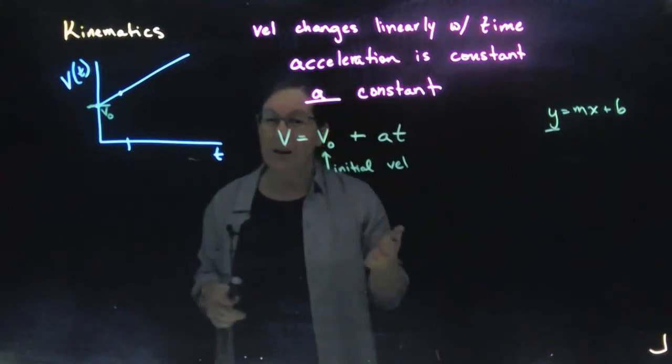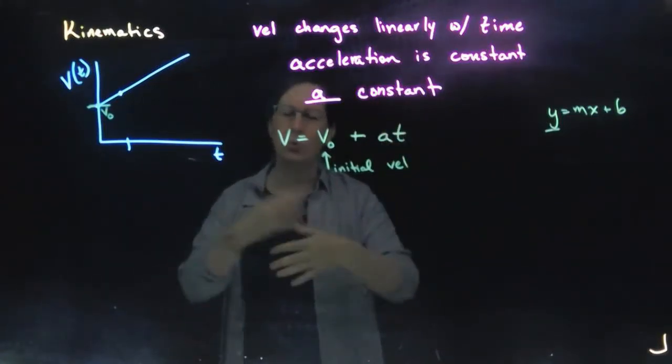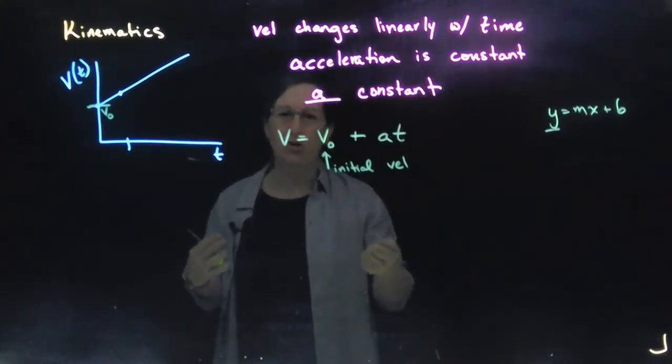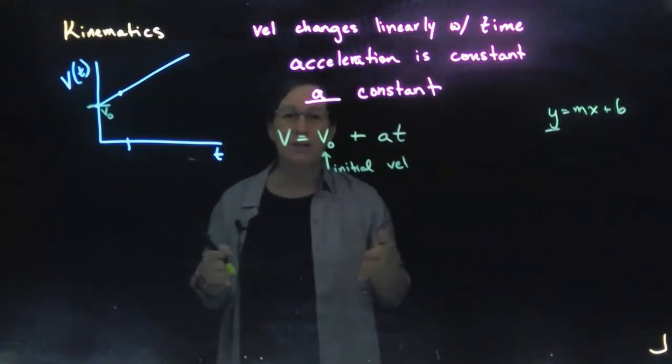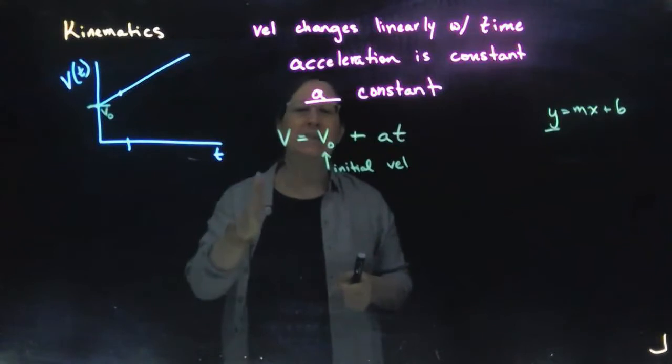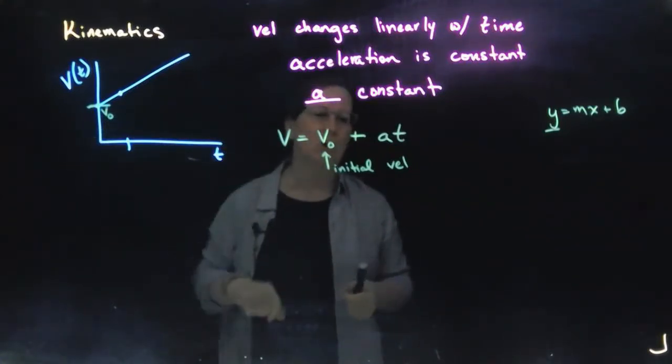Now, when is the initial velocity? Well, it's whenever you set time equals zero. If you're working one of the homework problems, you can decide, hey, I want to start my stopwatch here. I want to stop the video at this point. And I could call this spot where I start the video at t equals zero. And when we have that, then we have our initial velocity.